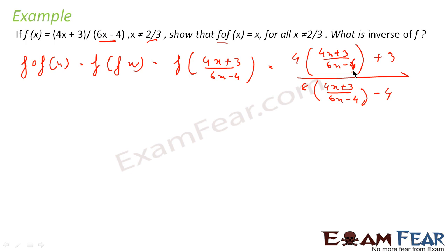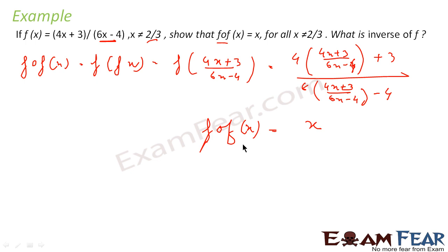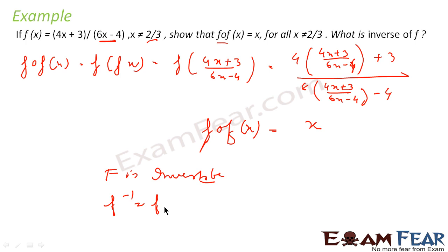If you solve this expression, you will get x. Thus we can see that f(f(x))=x, which means f is invertible and the inverse of f is f itself. Why? Because f(f(x))=x, meaning f is its own inverse: f⁻¹=f.